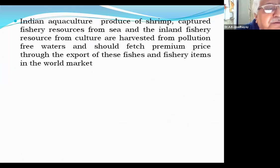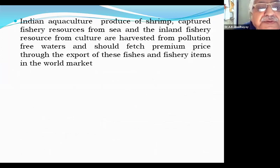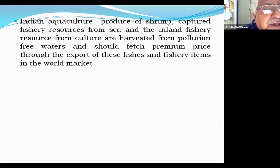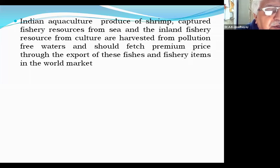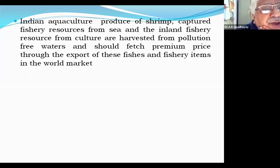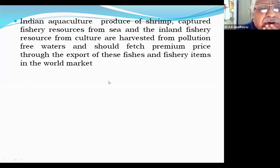What are all the strengths? Indian aquaculture produces shrimp, and fishery resources from the sea are collected from natural wild stock. The inland fish resource results from fish culture from our pollution-free waters. Pristine clear water should fetch premium prices through export and command foreign markets. We talk a lot about shrimp because it is the most sought commodity from India for export.